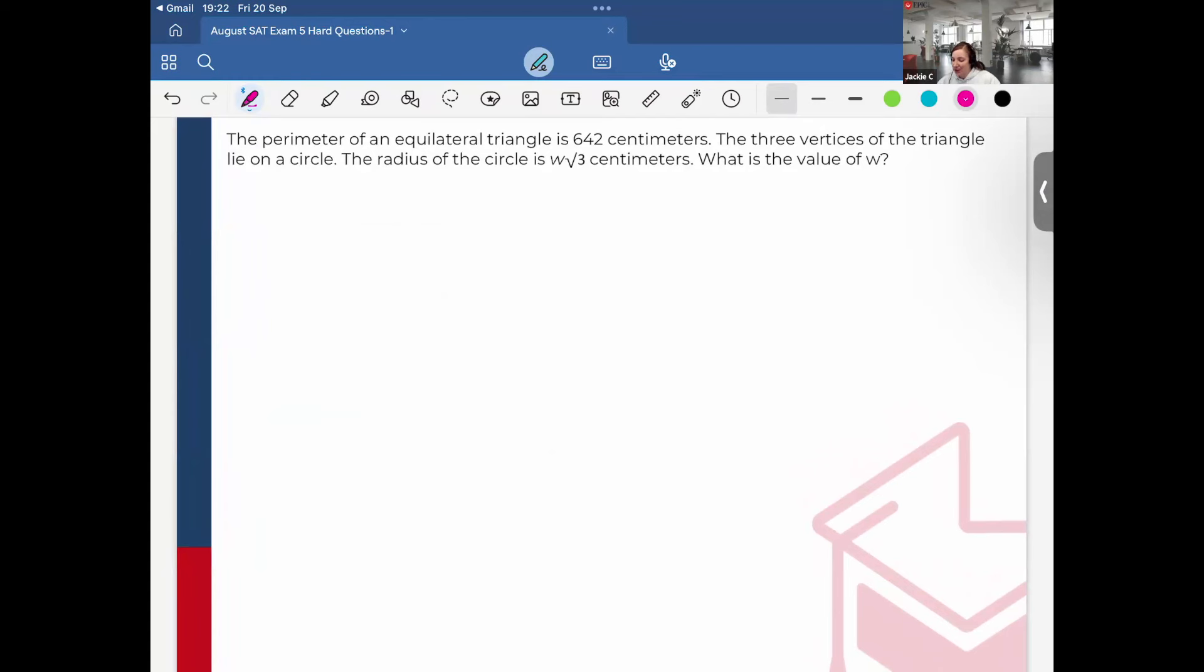The perimeter of an equilateral triangle is 642 centimeters. The three vertices of the triangle lie on a circle. The radius of the circle is W root 3 centimeters. What is the value of W? If the three vertices of the triangle lie on the circle, that means this equilateral triangle is inscribed in the circle. So we have 60, 60, 60 degrees. I'm going to do 642 divided by 3 because that will tell me the length of each side. So each side in this equilateral triangle is 214.